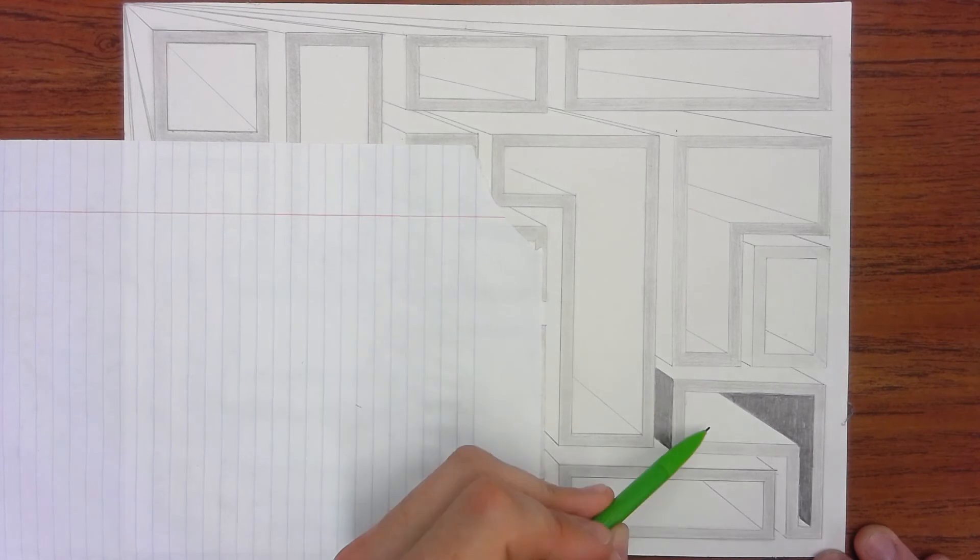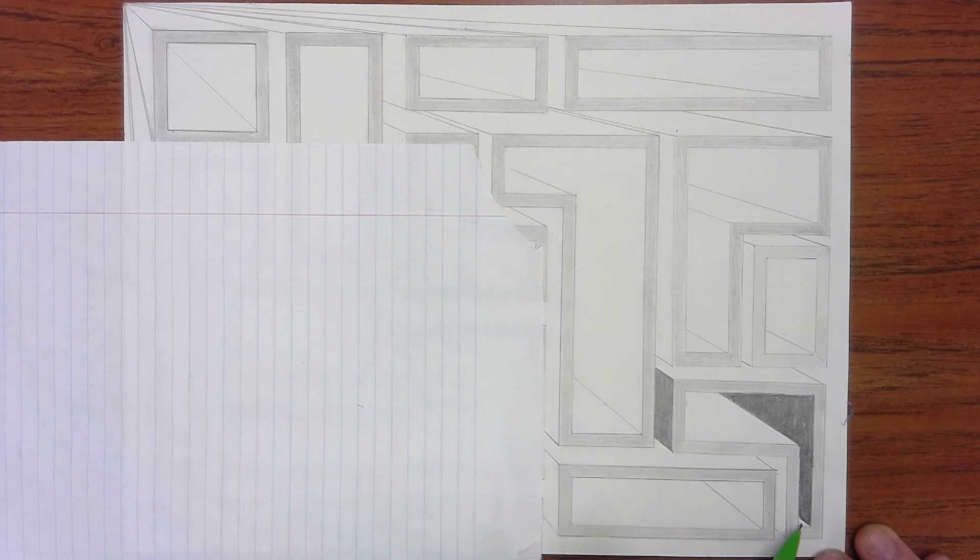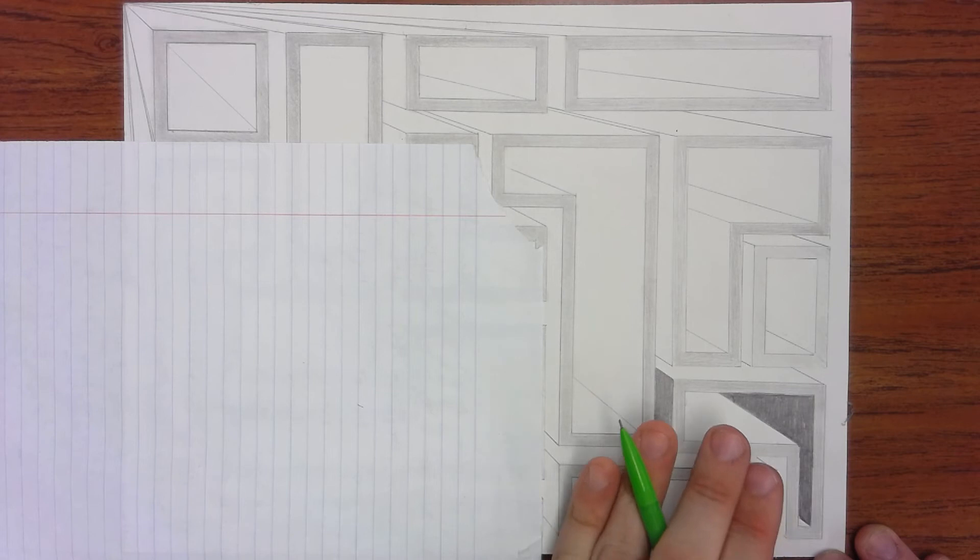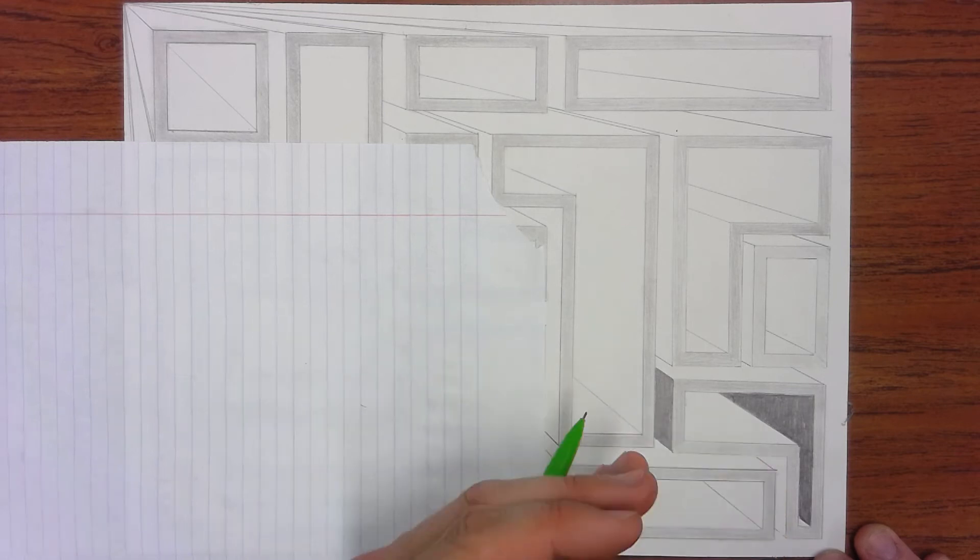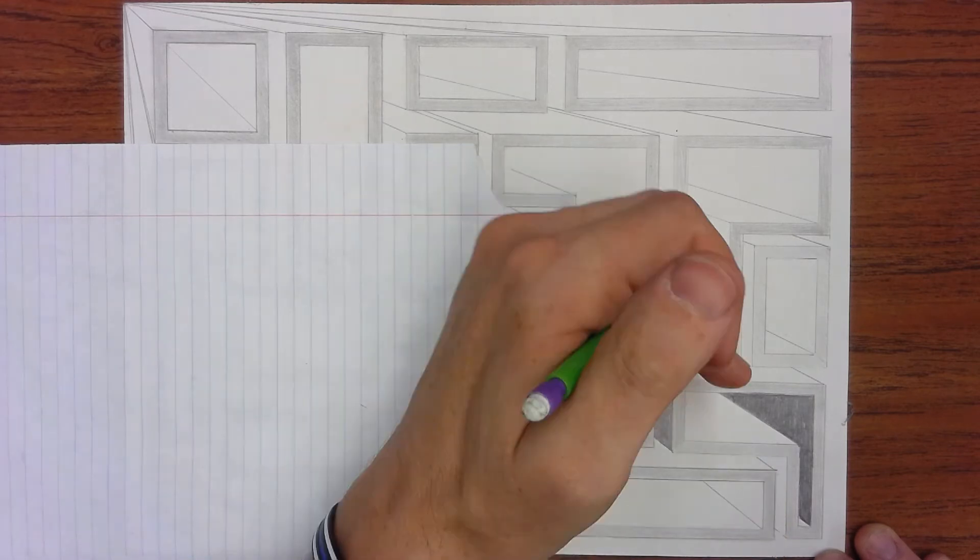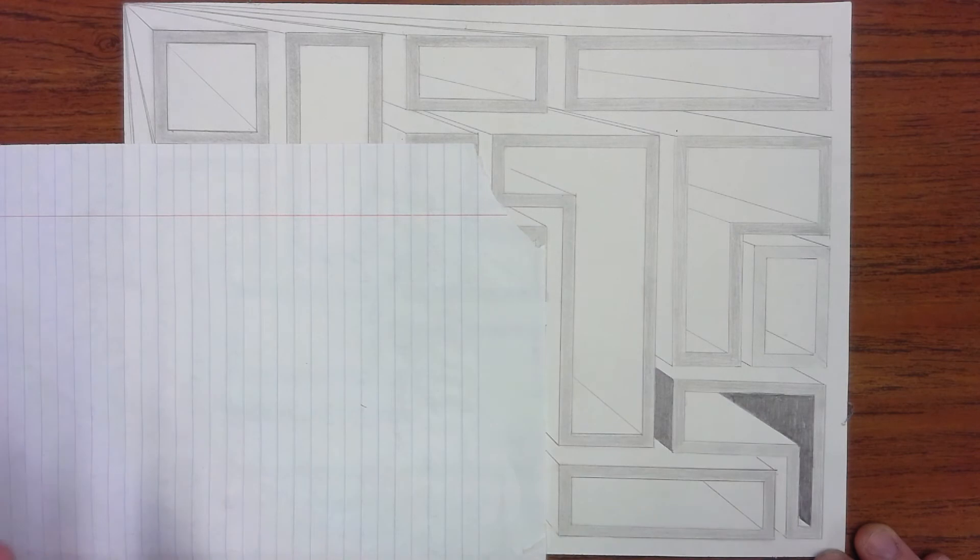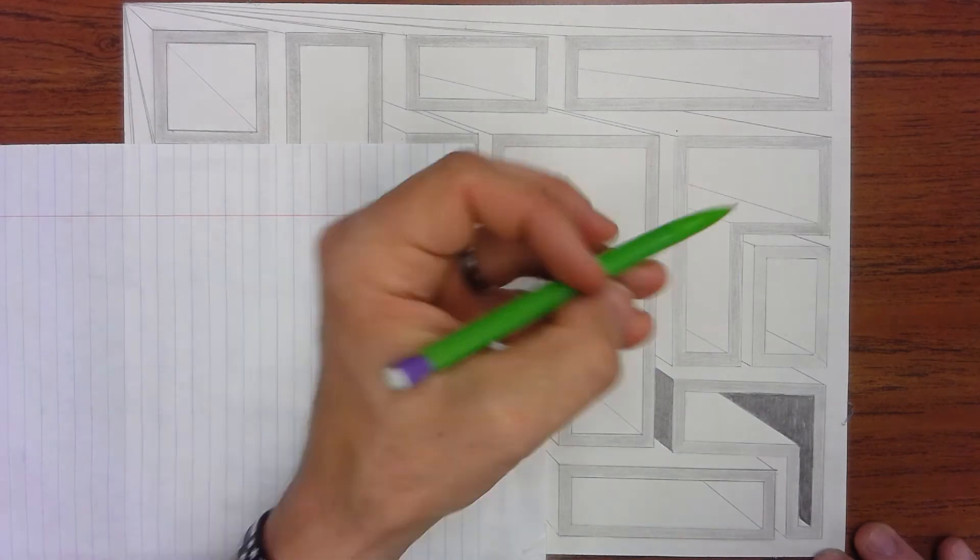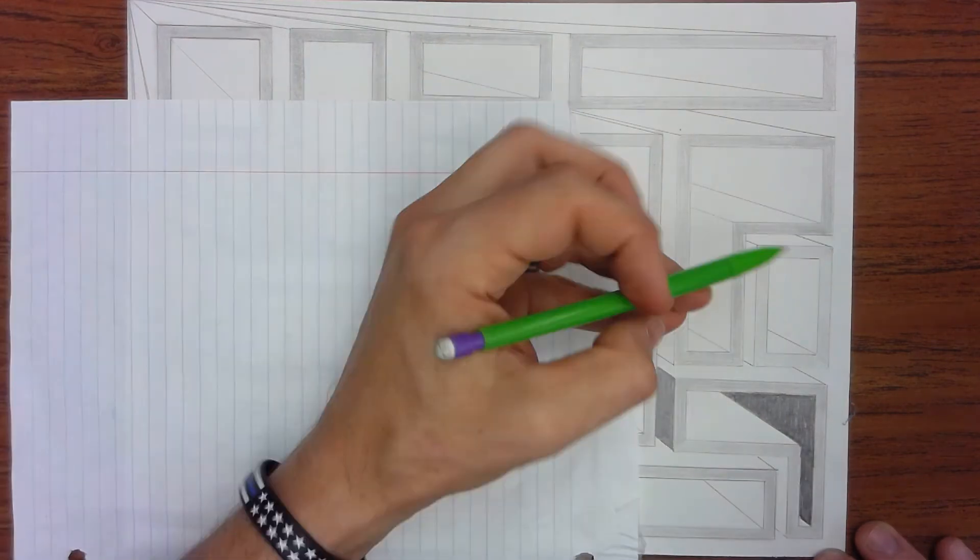We're going to leave the top, the inside top, we're going to leave all those white. So the front is gray, the side is dark gray, and the tops are white. Move on to my next box.